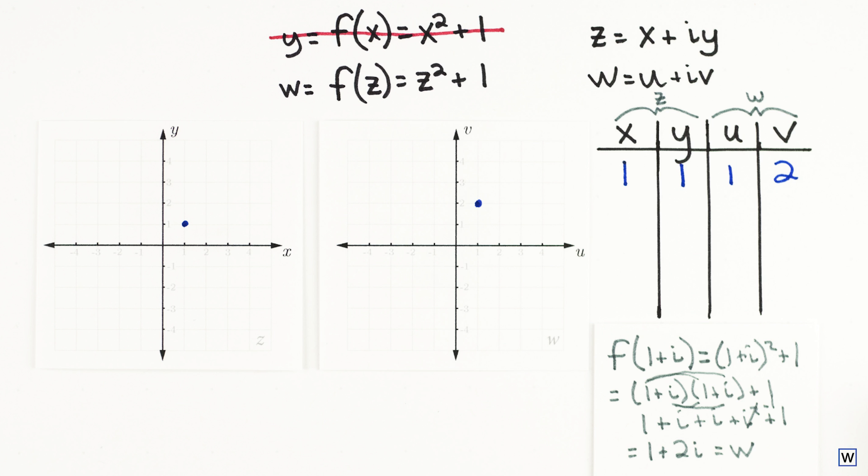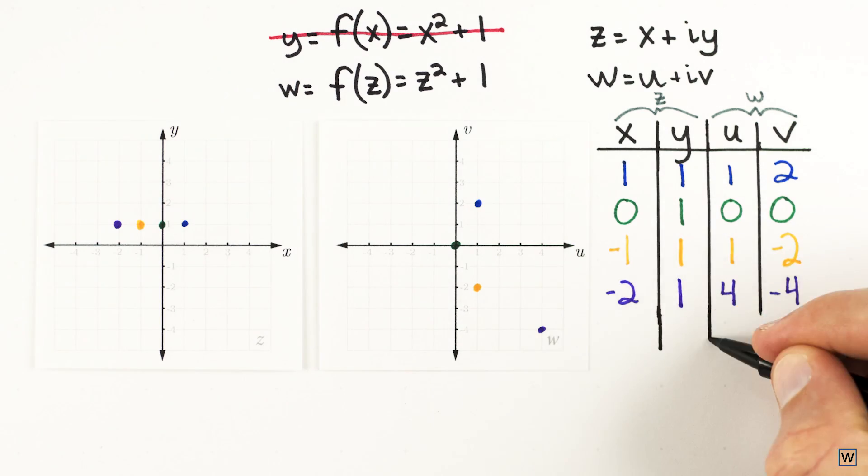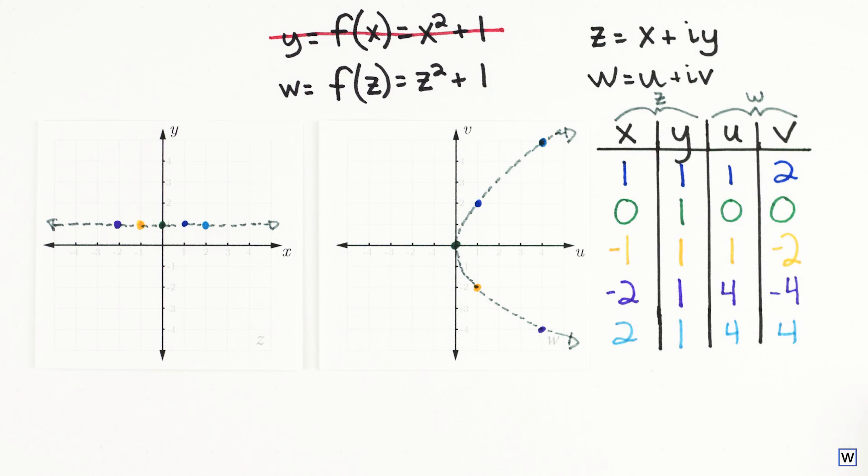Let's plug in a few more points here and see if we can find a pattern. If we test points along a straight line in our input space, we see that in our output space our straight line is transformed into a curved line. Interesting.